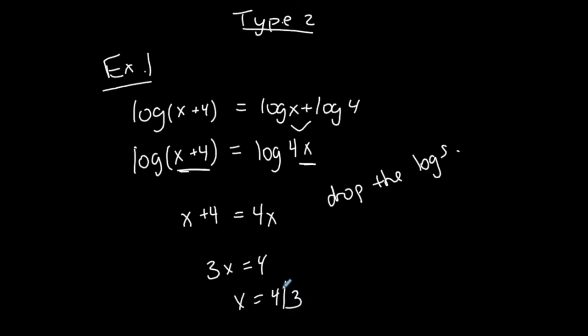Now, 4 thirds is a little bit bigger than 1, and you always have to check your solution. You're always checking for logarithmic equations. When I plug 4 thirds in, do I ever get a negative or do I get 0? If not, which I don't here, then it's my solution, part of my solution set.